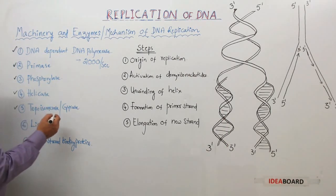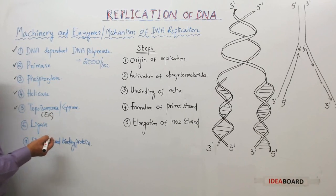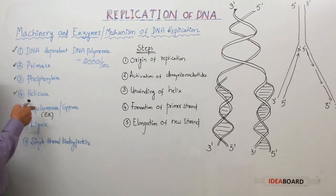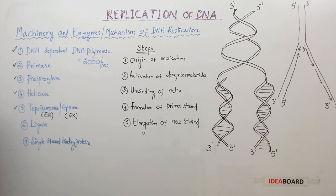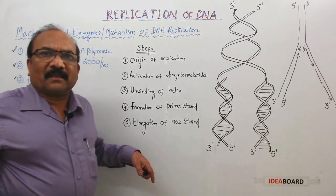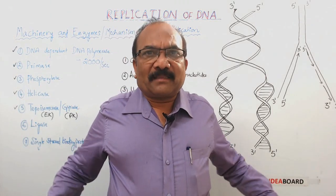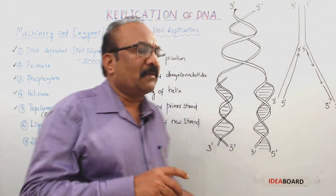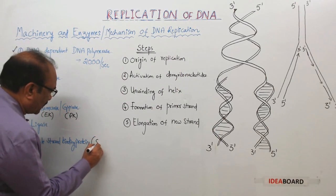The tension created at the replication fork is removed by the enzyme topoisomerase, found in eukaryotes. A similar enzyme that behaves like topoisomerase in prokaryotes is called gyrase. Additionally, the two separated strands must be stabilized, and this is done by proteins called single strand binding proteins, abbreviated as SSBP.